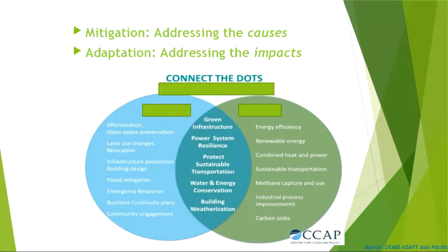There are also activities that fall within both adaptation and mitigation, like green infrastructure, power system resilience, creating sustainable transportation, building weatherization, and water and energy conservation.